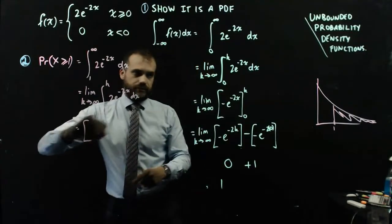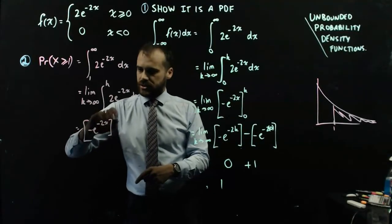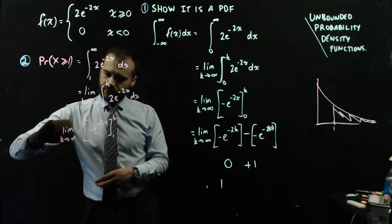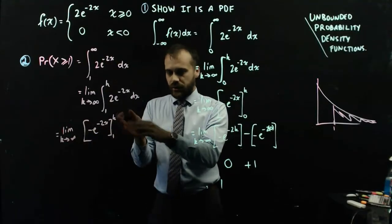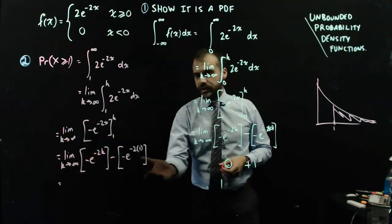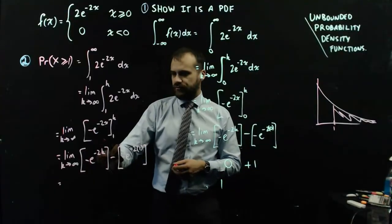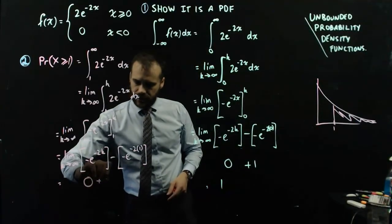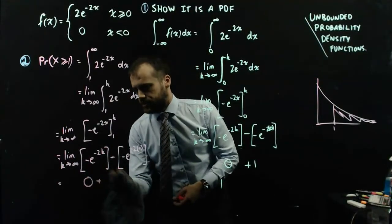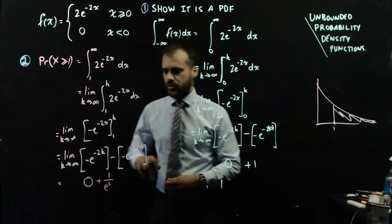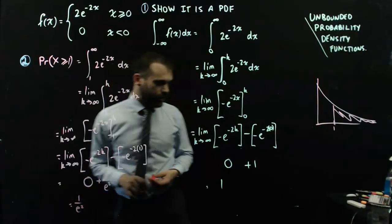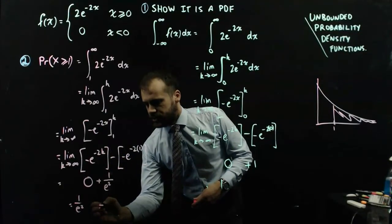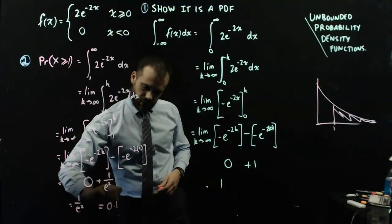I can now integrate that — I've already done it, so I know the result is negative e to the negative 2x, evaluated between k and 1, keeping the limit as k approaches infinity. Substituting k: as k approaches infinity that term goes to 0, the same way as before. Then subtracting negative e to the negative 2 times 1 gives plus e to the negative 2, which is the same as 1 over e squared, approximately 0.1353.